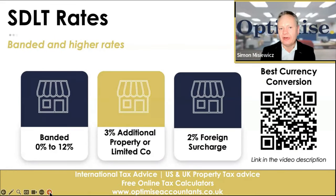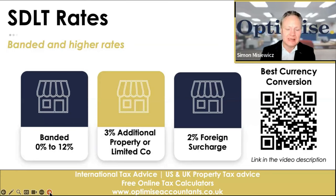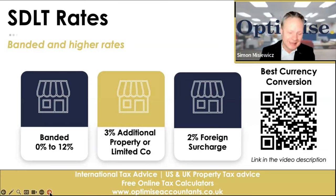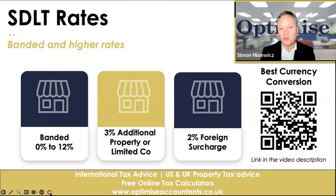Let's talk about banded and higher rates. There are different levels of stamp duty land tax to think about: the normal banded rate for residential runs from 0 to 12 percent based on property value. There's a three percent surcharge if you're buying a second property in your own name — that three percent also applies if you buy in a limited company. If you're a foreigner, there's yet another two percent surcharge. Please wait until you get to the UK so you don't have to pay that two percent, and even if you have paid both surcharges, there are ways of getting that money back.